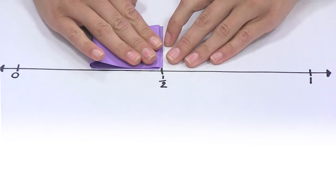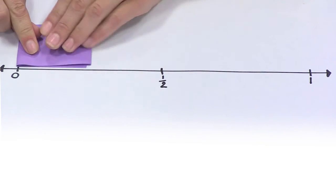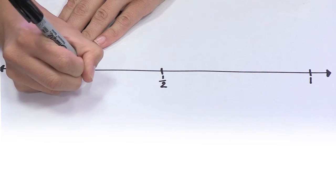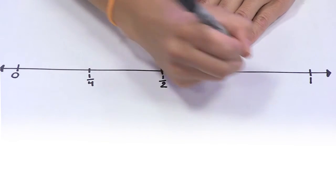If I fold the same piece of paper in half again, I have now created fourths, and can mark fourths on my number line.